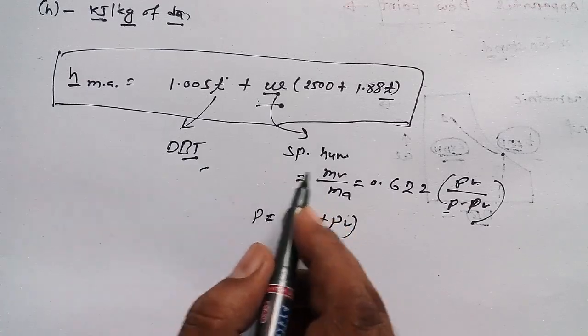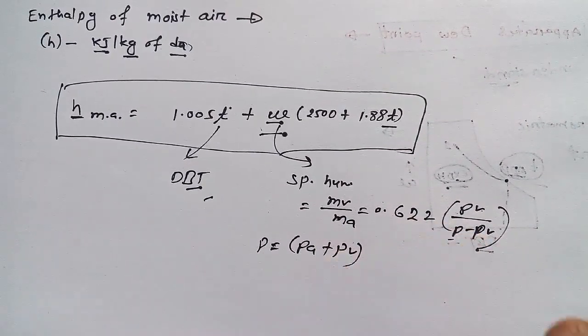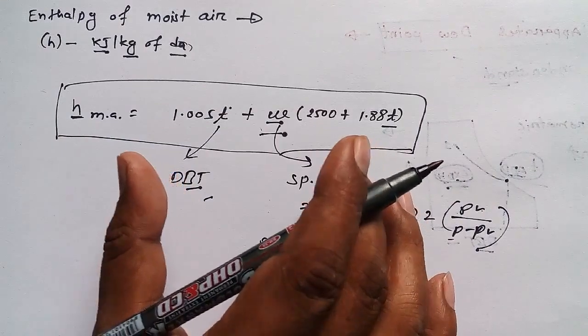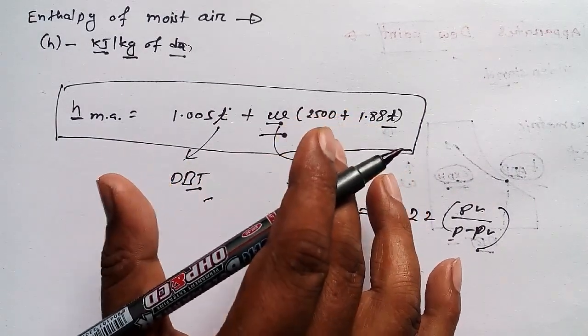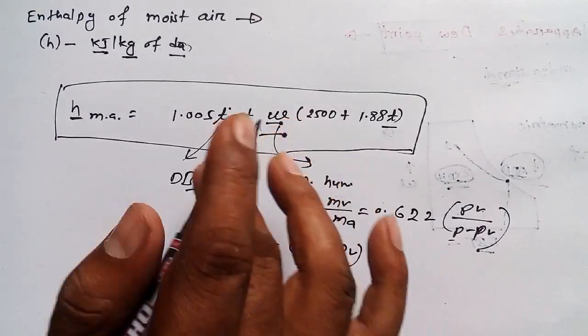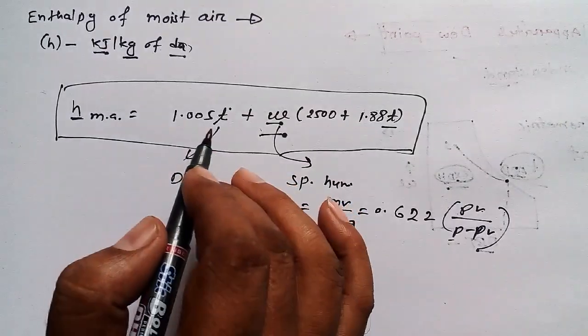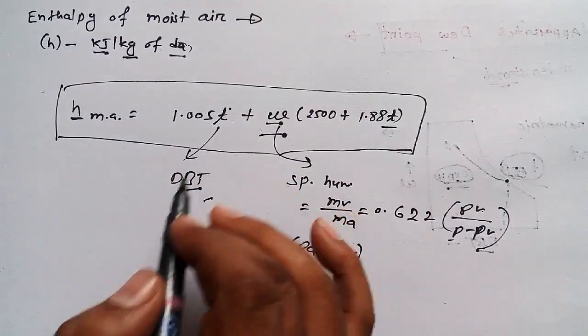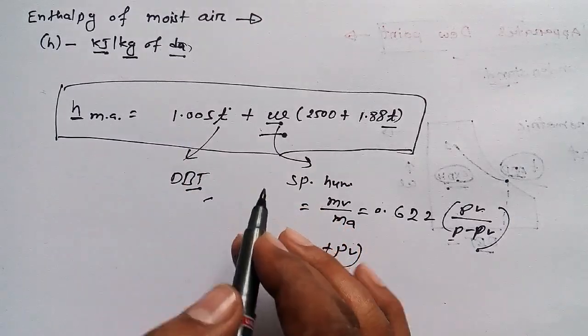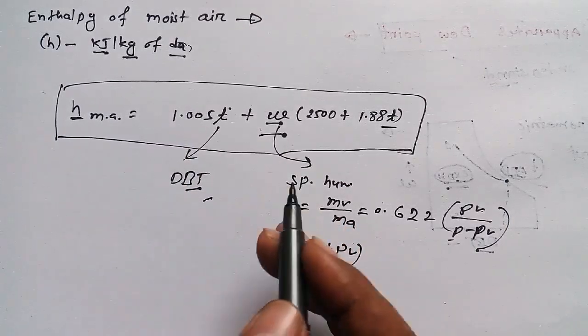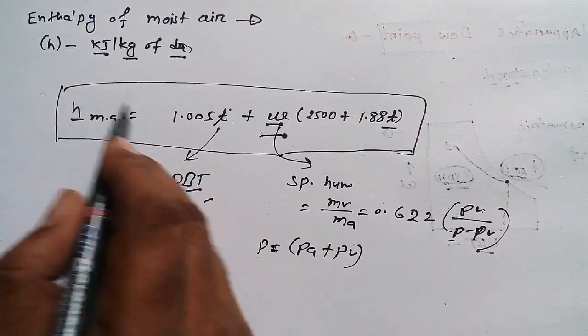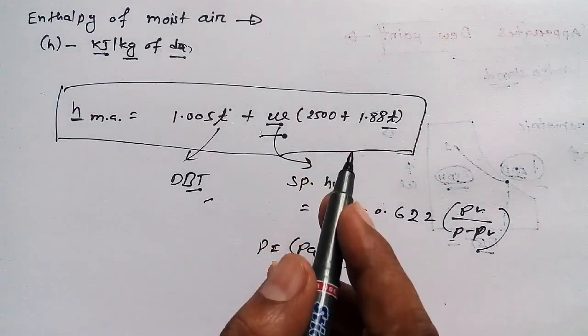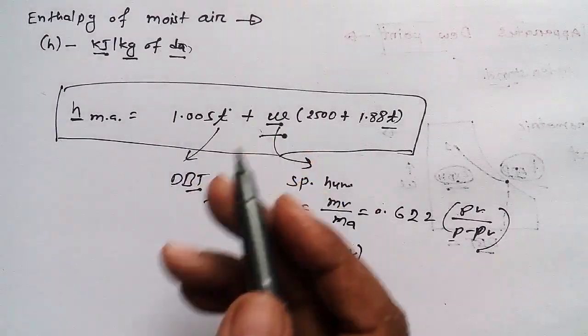The most important thing is how to remember this formula, because it's a bit lengthy. I suggest you write it two or three times, then solve questions related to it. You may need to find specific humidity, dry bulb temperature, or enthalpy of moist air in various questions.